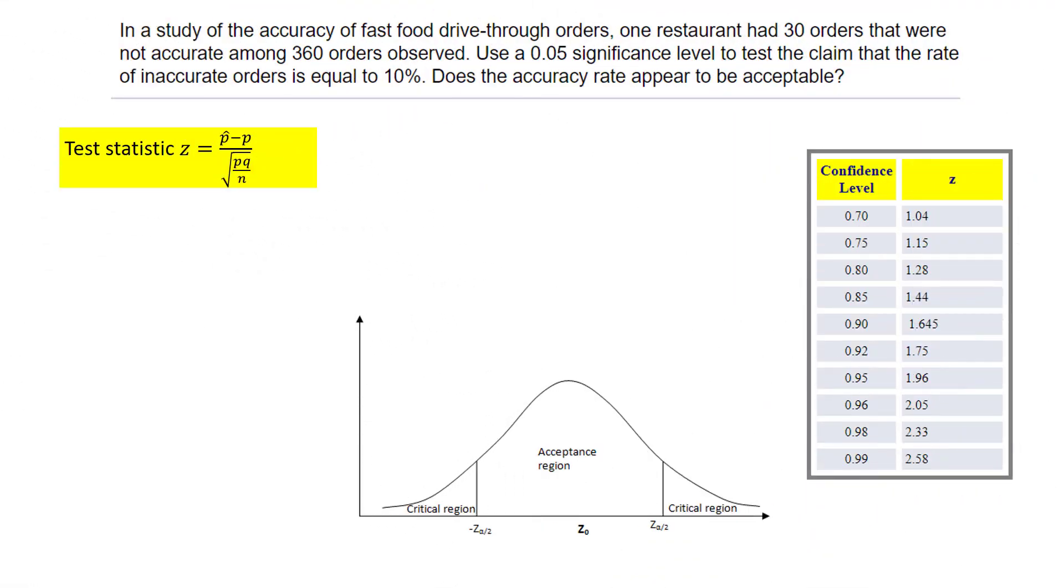In a study of the accuracy of fast food drive-thru orders, one restaurant had 30 orders that were not accurate among 360 total. This is the sample proportion p-hat, which equals x over n, where x is the number not accurate and n is the total. Calculating this gives 0.0833.